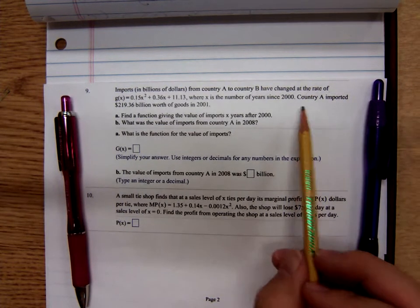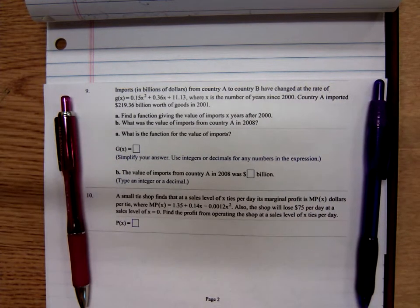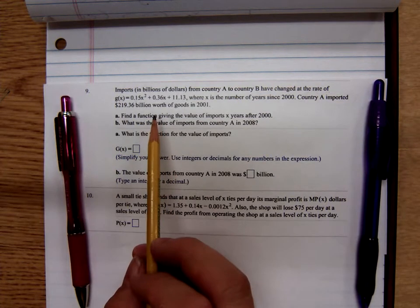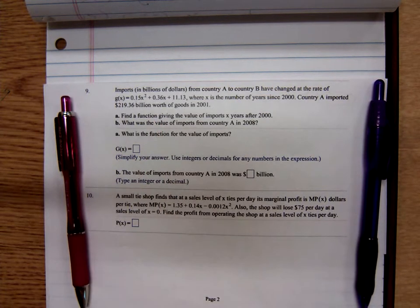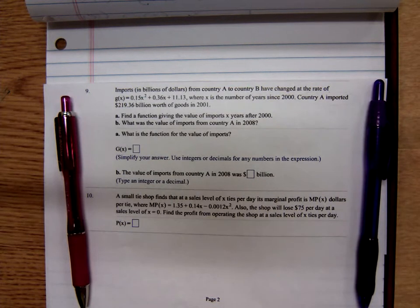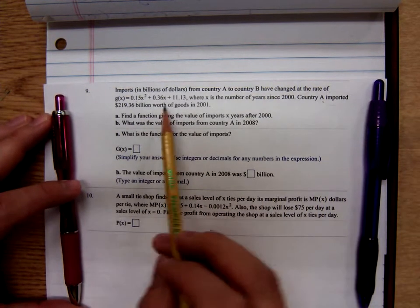Well, this is the information, those initial conditions I mentioned at the end of the last video I did. For word problems involving anti-differentiation, they have to give you something that you can use to find that constant of integration. So here they've given you this information right here, and that's where we'll use that.